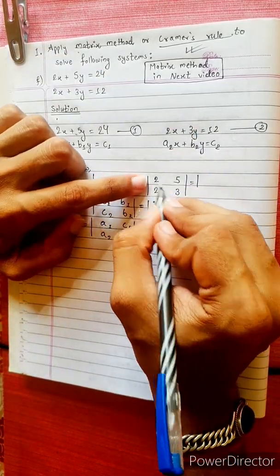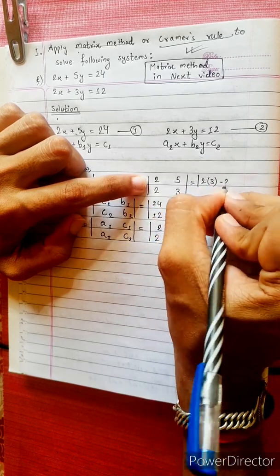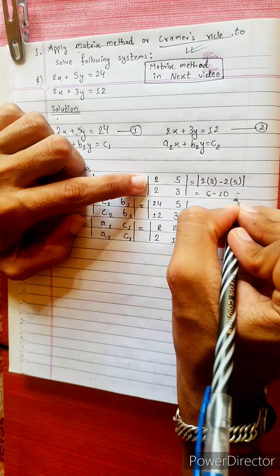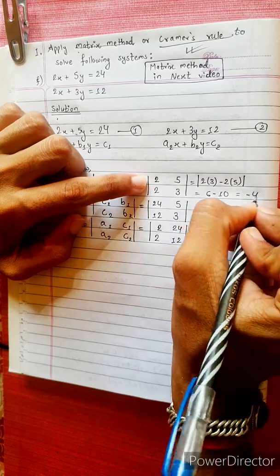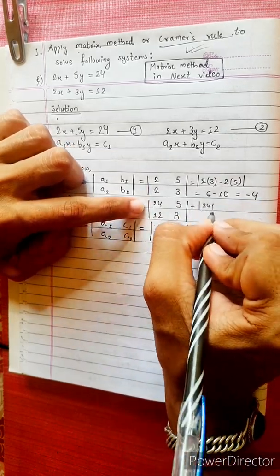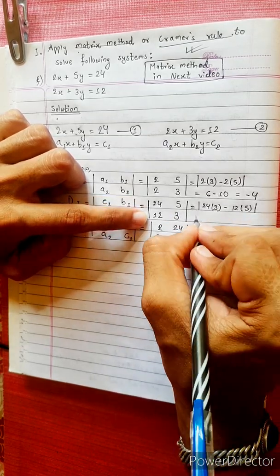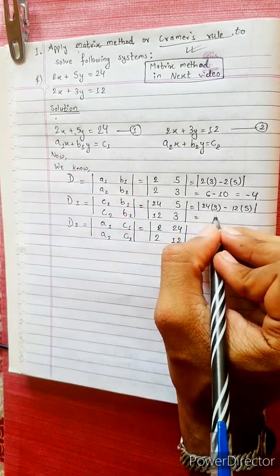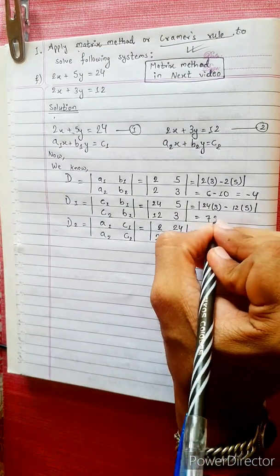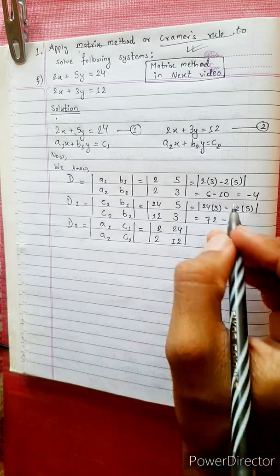Computing D: (2 times 3) minus (2 times 5) equals 6 minus 10, which equals negative 4. Computing D1: (24 times 3) minus (12 times 5) equals 72 minus 60, which equals 60.